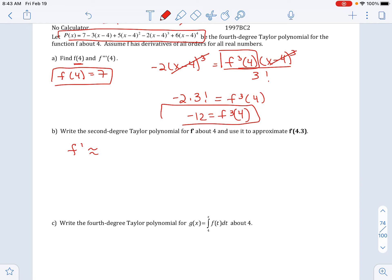So the derivative of 7 will be 0. The derivative of negative 3x minus 4 is just negative 3. Then the next term, bring down the power, reduce the power by 1. Same thing with the next term, bring down the power, reduce the power by 1.